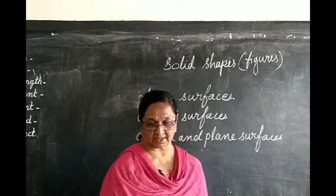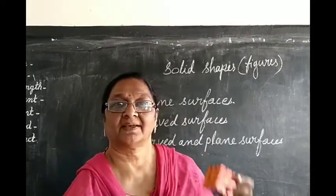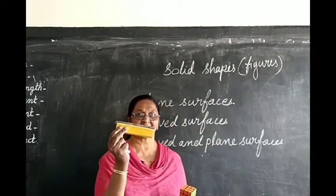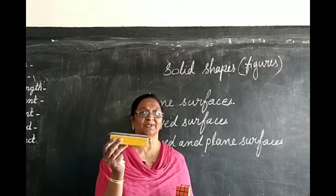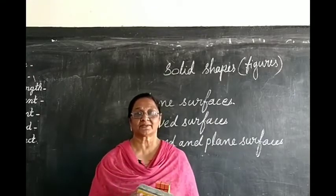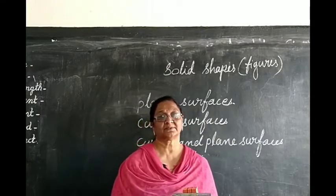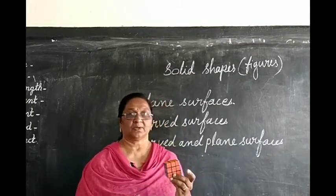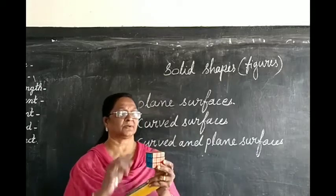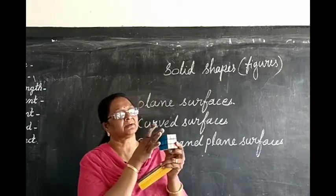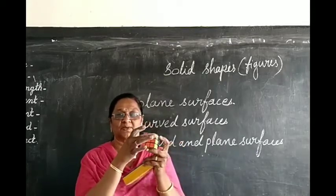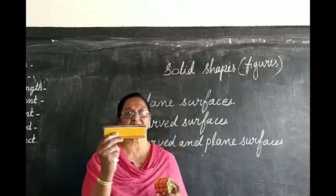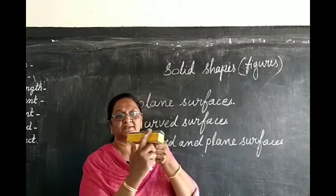I can show you some examples. This is a solid figure, and this one in my hand is also a solid figure. These solid figures have three types of surface. One is having a plain surface. See here, all these surfaces are plain. You can see all these surfaces are plain, and in this also you can see plain surfaces.